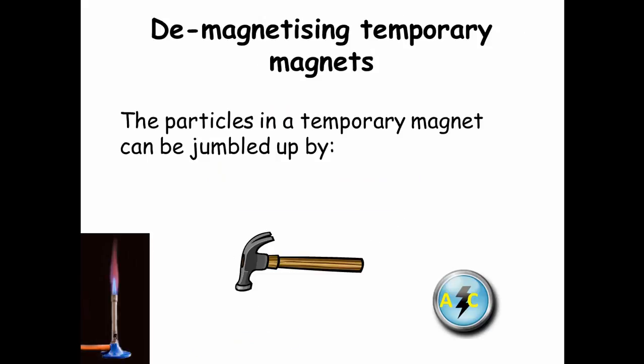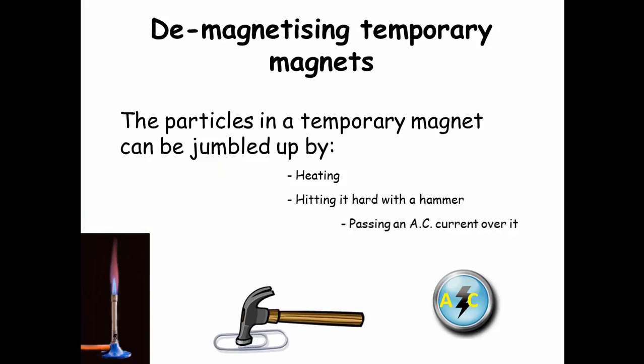But demagnetising a magnet can be done in three different ways. The particles in a temporary magnet can be jumbled up by heating, by hitting it hard with a hammer, or by passing AC electricity over it.